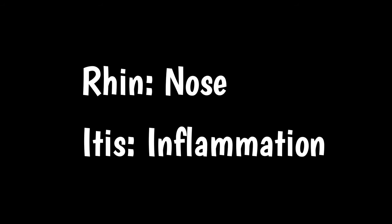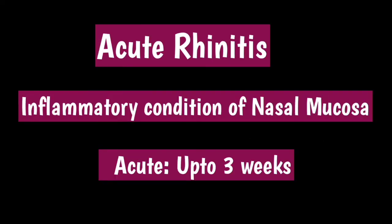In the word rhinitis, 'rhein' refers to the nose and 'itis' means inflammation. So rhinitis is basically any kind of inflammatory condition of nasal mucosa. Acute means a condition which is of up to three weeks in duration, so inflammation of the nasal mucosa up to three weeks is called acute rhinitis.